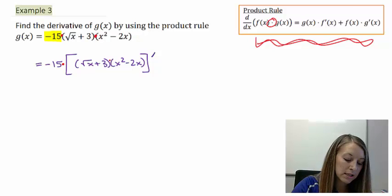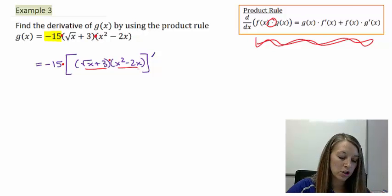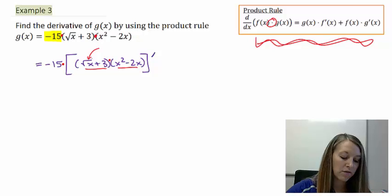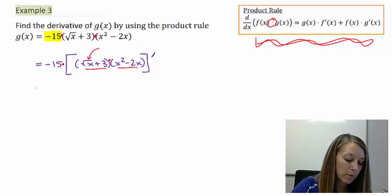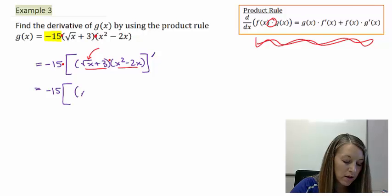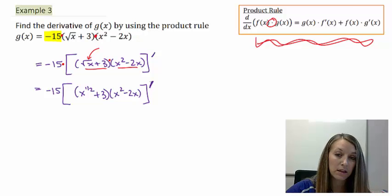Now, on the inside, since I do have a multiplication between two functions, I will have to do my product rule. So I don't know how to take the derivative of this square root of x, so I'm going to have to rewrite it. So I know that that can be rewritten as x to the one-half power. And again, I still need to take the derivative of all of this.